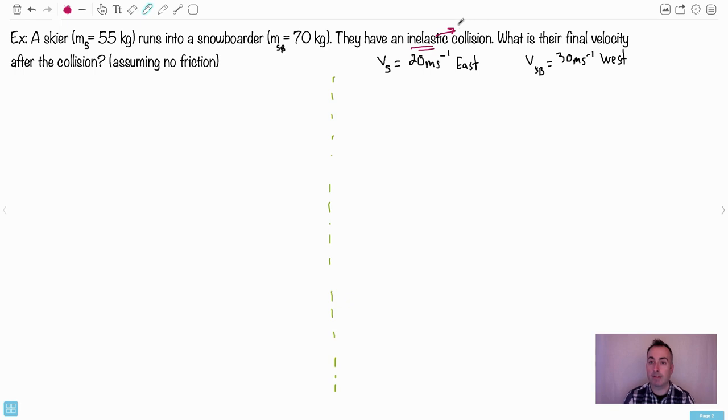They have an inelastic collision. Do you know what inelastic means? Inelastic means they don't bounce - in other words, they stick together. That's the important thing here. What's their final velocity after the collision, assuming no friction? We're given that the skier is 20 meters per second east and the snowboarder is going 30 meters per second west. I think maybe it helps to draw something here.